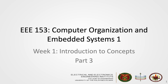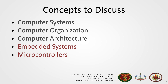Hello everyone, welcome back! In the first two videos, we have discussed computer systems and their hardware and software components. We have also discussed the difference between computer organization and architecture, and the different classifications of architecture. In this last video, we are going to talk about one type of computer system out of the many types of computer systems. This is called embedded systems.